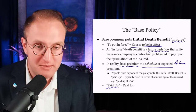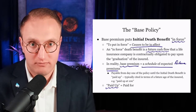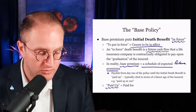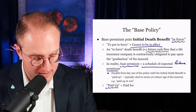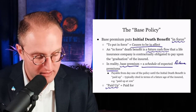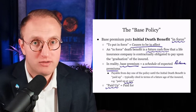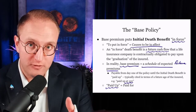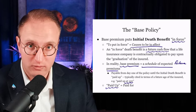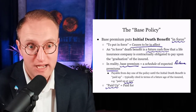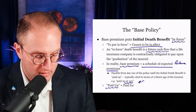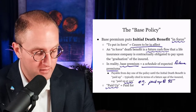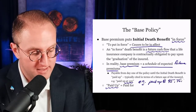Base premium is payable from day one of the policy until the initial death benefit is paid up. The end point of that schedule is typically referred to by the age of the insured. A policy paid up at 100 means base premium is payable from day one until the policy year in which the insured turns age 100. There are others paid up at age 95, 75, 65, and so forth.